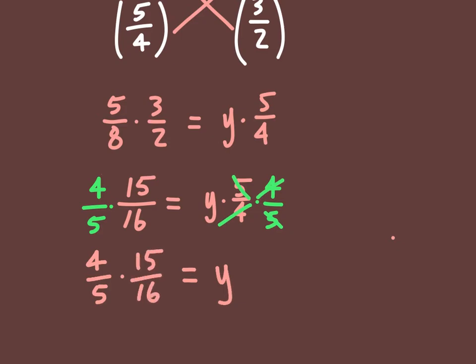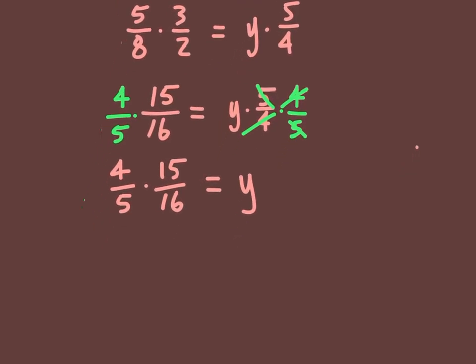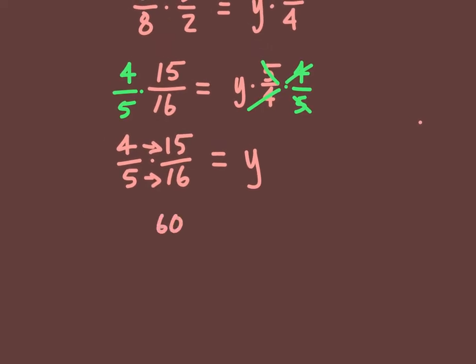And then you've got 4 fifths times 15 sixteenths. And you can do this a couple of different ways. We can just multiply across on both of these. So, 4 times 15 gives us 60, and then 5 times 16 gives us 80. And that's equivalent to y.